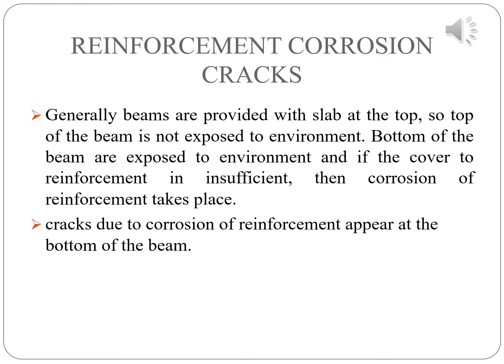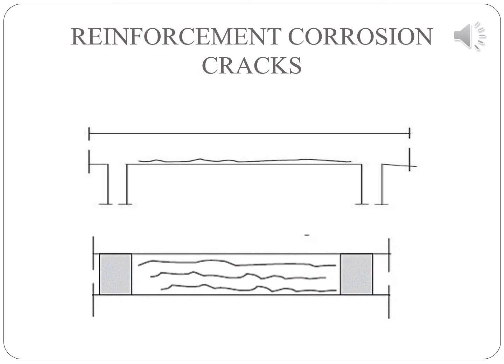The fourth type of cracks is reinforcement corrosion cracks. Generally, beams are provided with a slab at the top, so the top of the beam is not exposed to the environment. The bottom of the beams is exposed to the environment, and if the cover of reinforcement is insufficient, corrosion of reinforcement takes place. Cracks due to corrosion of reinforcement appear at the bottom of the beam. This type of crack can be prevented by good quality control during construction by providing adequate reinforcement cover as per environmental condition. In this picture, reinforcement corrosion cracks are visible in the beam.